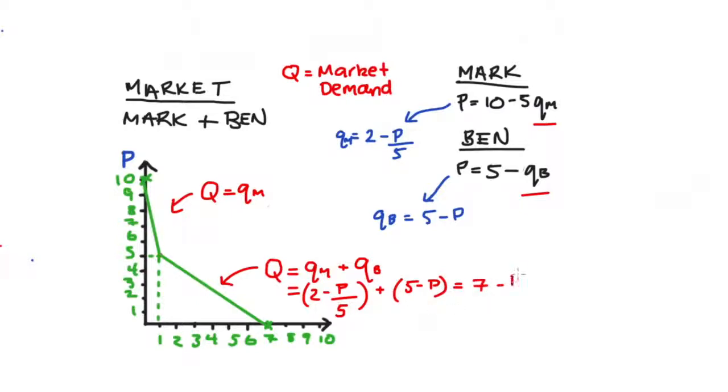Opening up the bracket, we get 7 from the 5 and the 2 minus P on 5 minus P. Now since we can only add or subtract fractions with common denominators, I'm going to rewrite this negative P in this equation as negative 5P on 5. This is equivalent to the negative P since negative 5 divided by 5 is just equal to negative 1. So if we do that, we get 7 minus 6P on 5 and that's only if the price is less than or equal to 5.